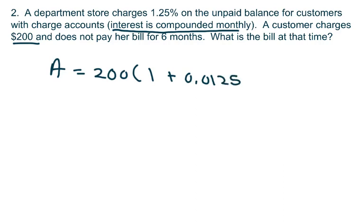And it was 6 months. So this is approximately $215.48. So she has to pay an extra $15.48. Okay.